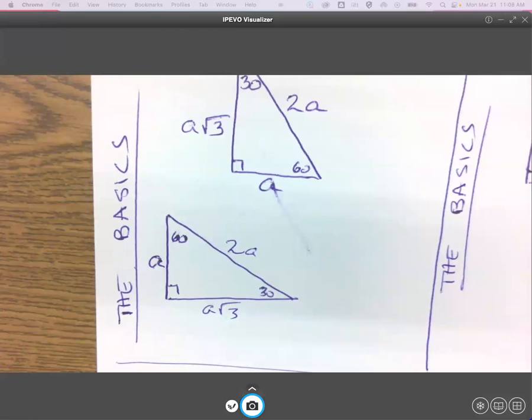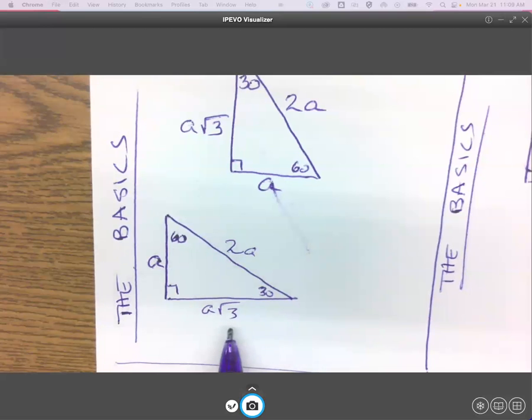That's what we did last class. So in the event that I had, for instance, an 8 here for this, what would be my hypotenuse? 16. Twice that. And if this were 8, what would be my longer leg? 8 root 3.